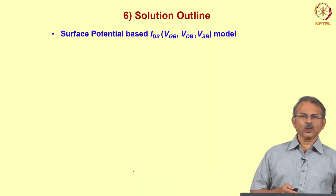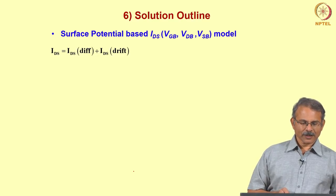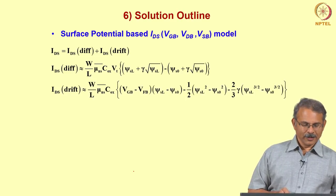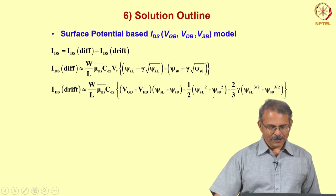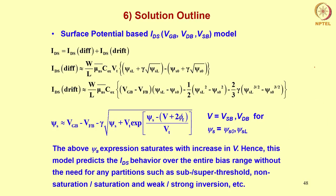Let us put together the surface potential based model. Ids consists of diffusion and drift. The diffusion current is given by its formula, and the drift current is given by a longer formula with linear, square law, and 3/2 power law terms. The ψs is solved using the surface potential equation. This ψs expression saturates with increase in V; hence this model predicts Ids behavior over the entire bias range without any partition such as sub- or super-threshold, non-saturation or saturation, or weak or strong inversion. It includes drift and diffusion and saturates naturally.